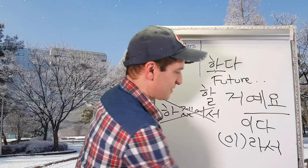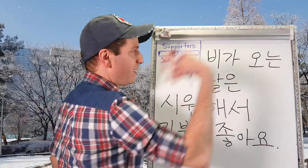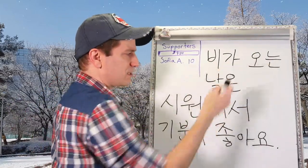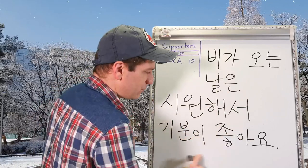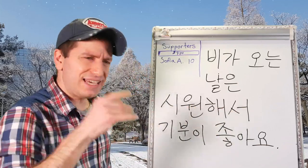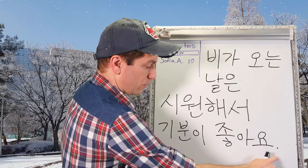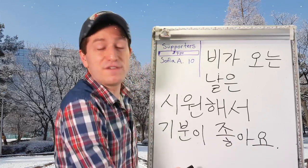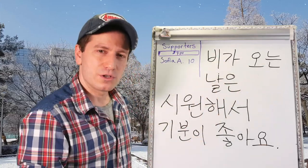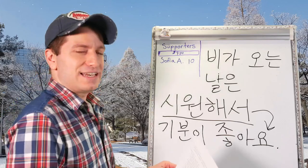Let's go to our first example sentence. 비가 오는 날은 시원해서 기분이 좋아요. 비가 오다 means to rain — literally 'the rain comes.' On a rainy day, it is cool (시원하다), and because it is cool, my mood — 기분이 좋아요 — is good. I feel good on rainy days because it's cool.